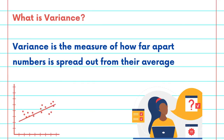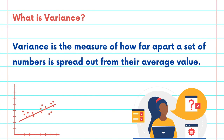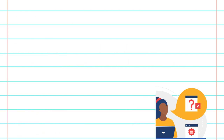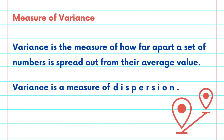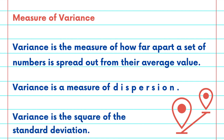So what is variance? Variance is a measure of how far apart a set of numbers is spread out from their average value. This means that variance is a measure of dispersion. Variance is also known to be equal to the square of the standard deviation.